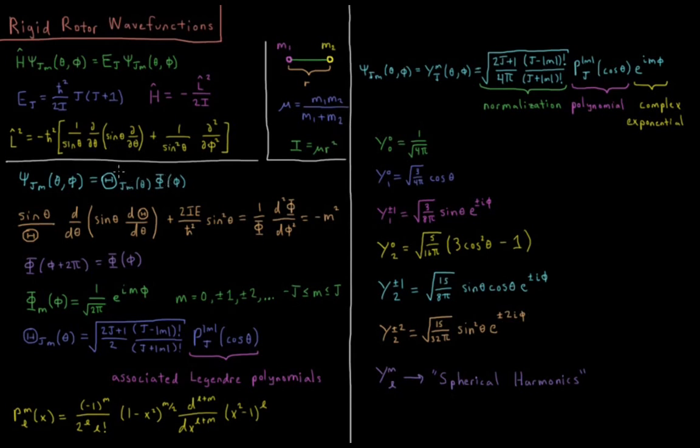So when we do that, we apply our Hamiltonian to our wave function. What we're going to get is this mess down here. Sine theta over function theta d d theta of sine theta d theta d theta plus 2 times moment of inertia times energy over h bar squared sine squared theta, that's all things that depend on theta, equals 1 over phi d squared phi with respect to little phi. And this is all equal to a constant, which we'll call negative m squared.